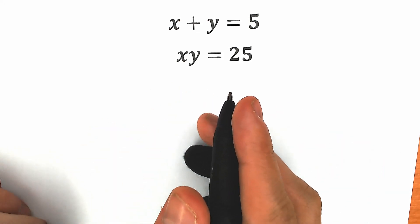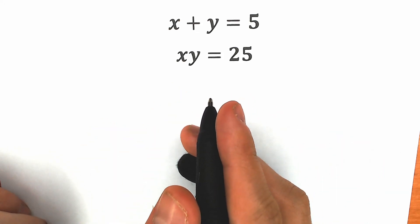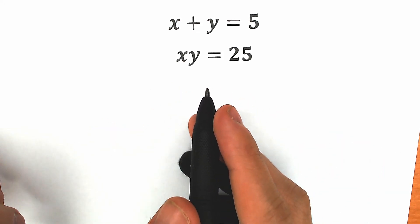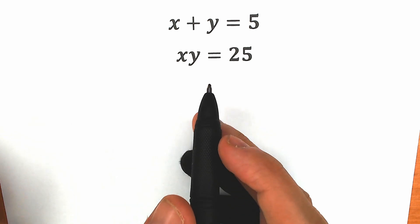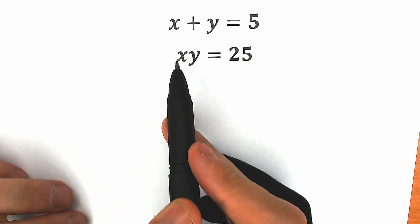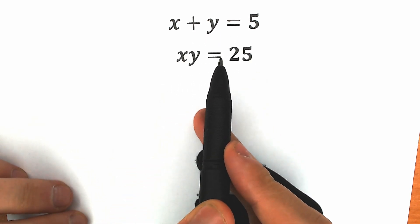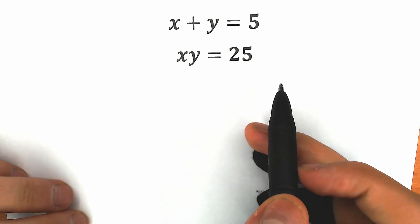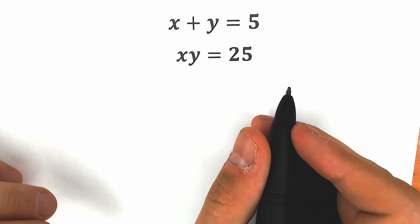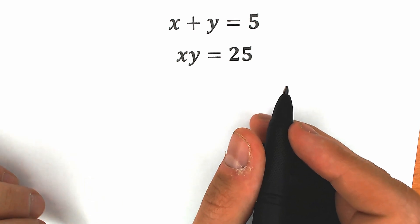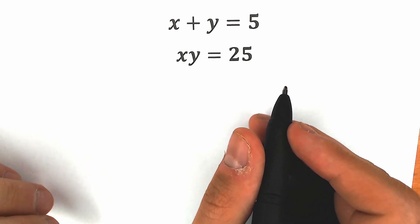Hello everyone, happy to see you here. Welcome back to my channel. I'm Semantics. Today we have a really interesting and relaxing algebra question. x plus y equals 5, and the product x times y equals 25. We need to find x and y. You can pause the video and write your solution, then write your assumption down into the comment section and we will check your answers here in just a few minutes.